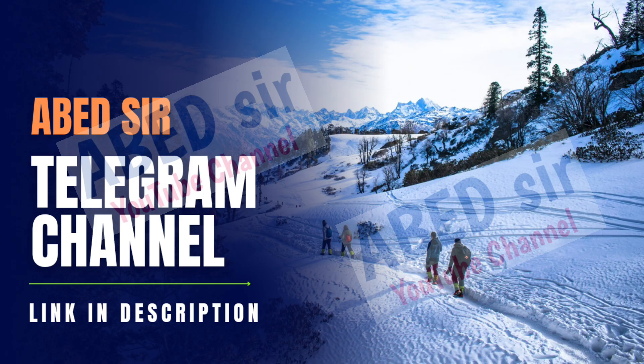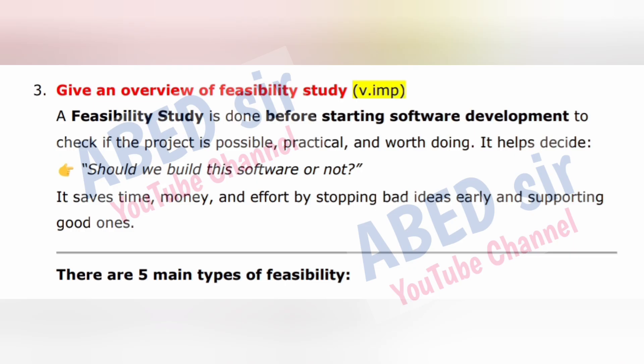The next important long question is: Give an overview of feasibility study. A feasibility study is done before starting software development to check if the project is possible, practical, and worth doing. It helps decide: should we build this software or not? It saves time, money, and effort by stopping bad ideas early and supporting good ones. There are five main types of feasibility.